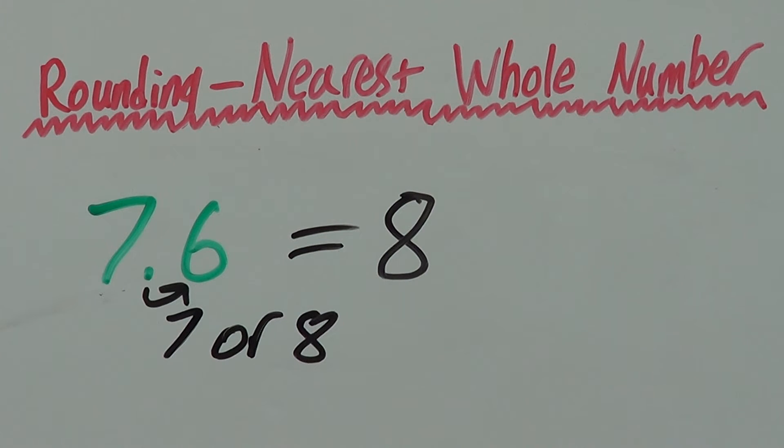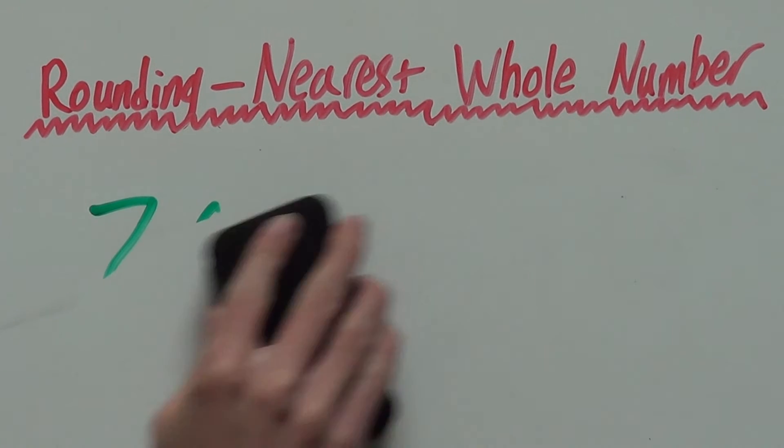If it's less than 5, we would round down. So, 7.6 rounded to the nearest whole number would be 8. We'll look at a few more examples.